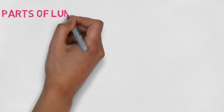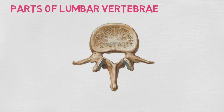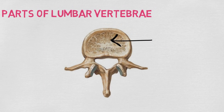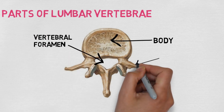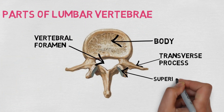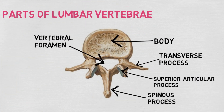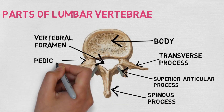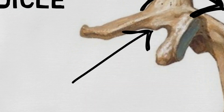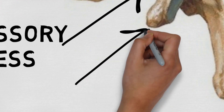Let's revise the parts of lumbar vertebrae as a whole. First, we see this massive body. Next, this hole is our vertebral foramen. This laterally projecting process is our transverse process. These are the superior articular processes. This is the spinous process. The vertebral body is connected to the arc by this pedicle. This small process is our accessory process, and this pointed out process is the mammillary process.